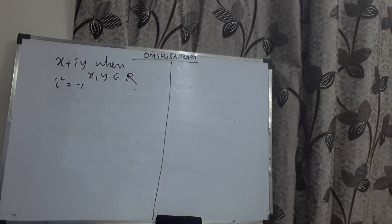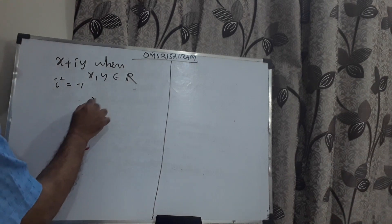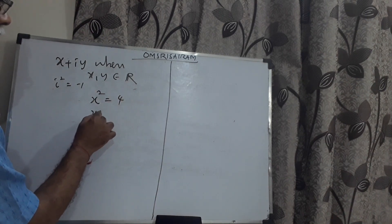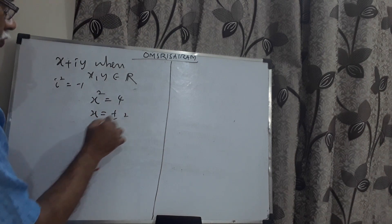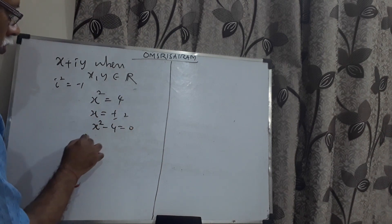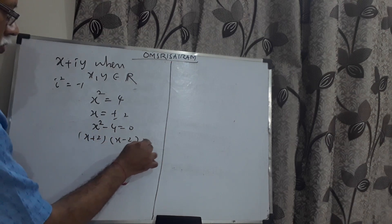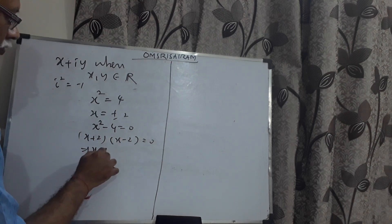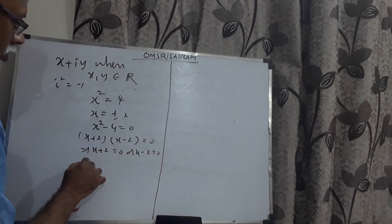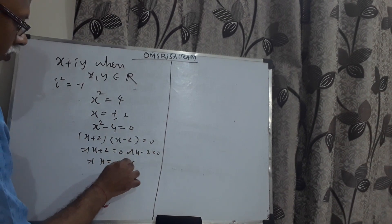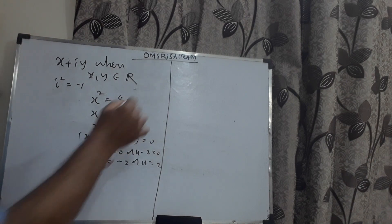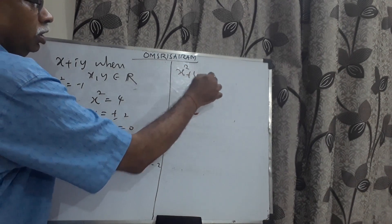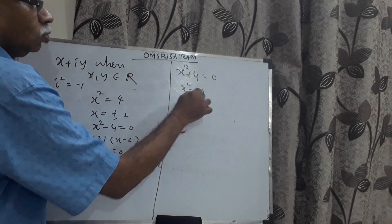The need for complex numbers is like this. If I think about the roots of x squared equals four, I get x equals plus or minus two. But if I take x squared plus four equals zero, I end up with x squared equals minus four.